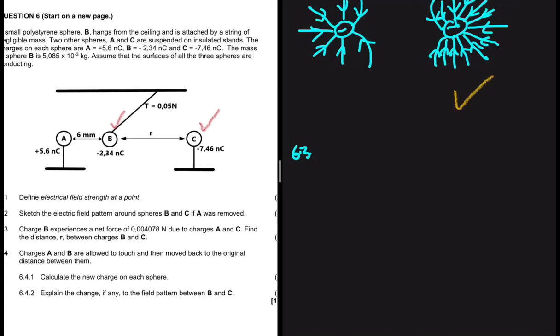Let's look at 6.3. 6.3 is saying that charge B experiences a net force of 0.004078 newtons due to charges A and C. Find the distance r between the charges B and C. Let's go ahead and do some conceptualization here. So our charge of interest is B. We have the net electrostatic force that B is experiencing due to A and C. So let's draw a free body diagram for all the forces that B is experiencing along the x.